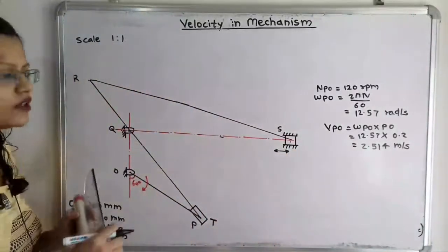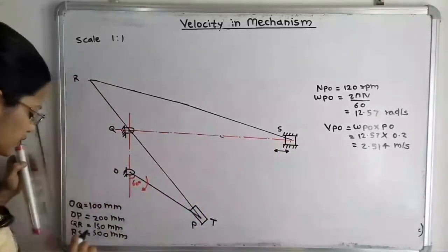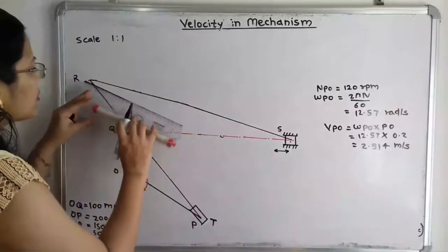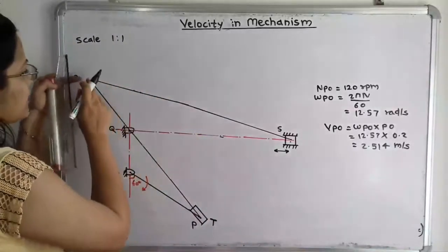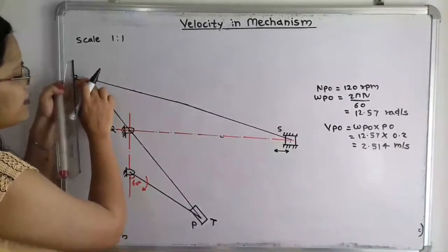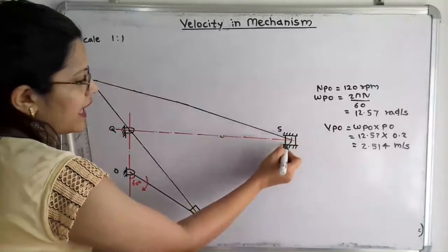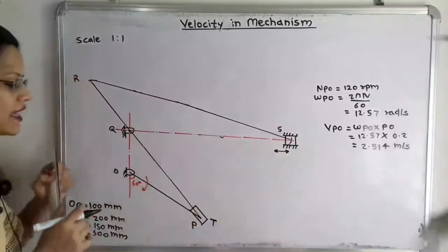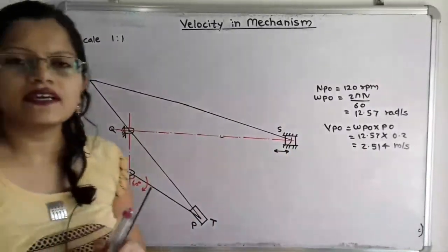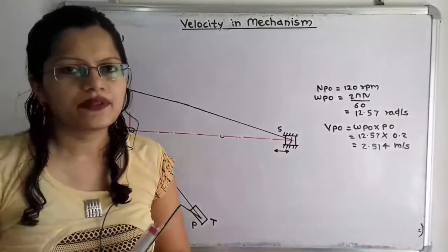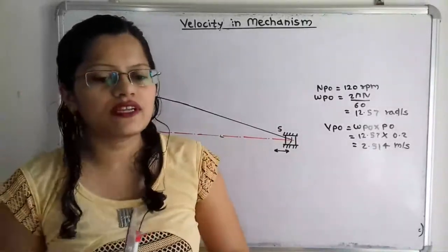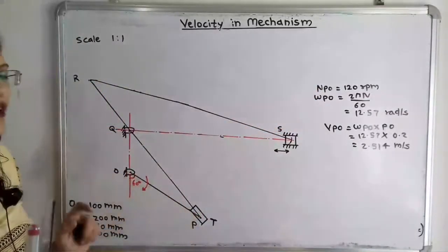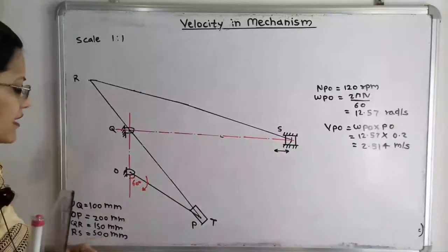The slider S has reciprocating motion along this horizontal line. The distance RS = 500 mm, that is 50 cm. Using a compass with R as center, we mark an arc at 50 cm on the horizontal line and draw slider S. The space diagram is now complete. Now we move to the calculation of linear velocity. The rotational speed of point P about O is given — OP is the crank rotating at 120 rpm.